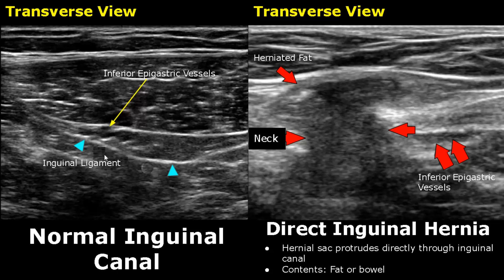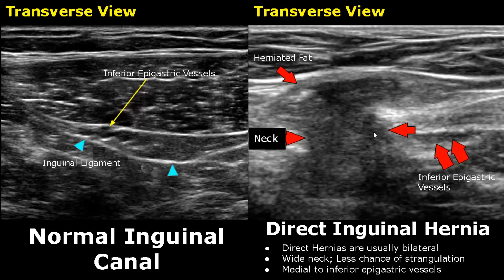This is the inguinal ligament. Over here we have a direct inguinal hernia — the hernial sac protrudes directly through the inguinal canal. We see a wide neck and hypoechoic herniated fat. Direct hernias are usually bilateral; they have a wide neck which reduces the chance of strangulation. A direct hernia is mostly found medial to the inferior epigastric vessels.